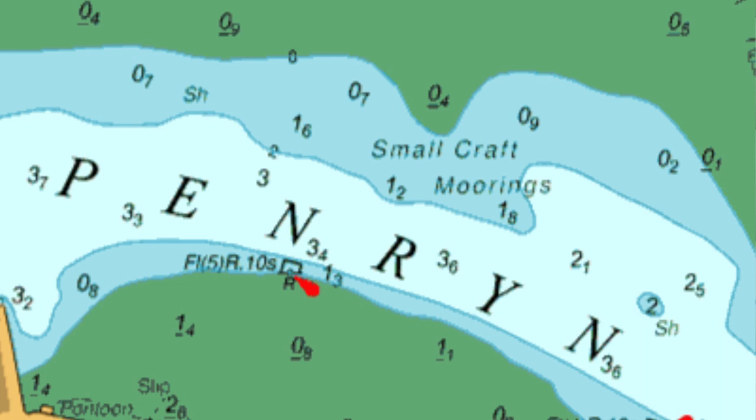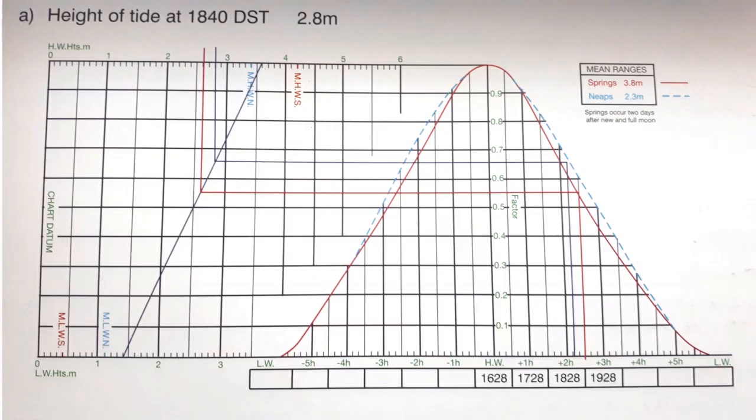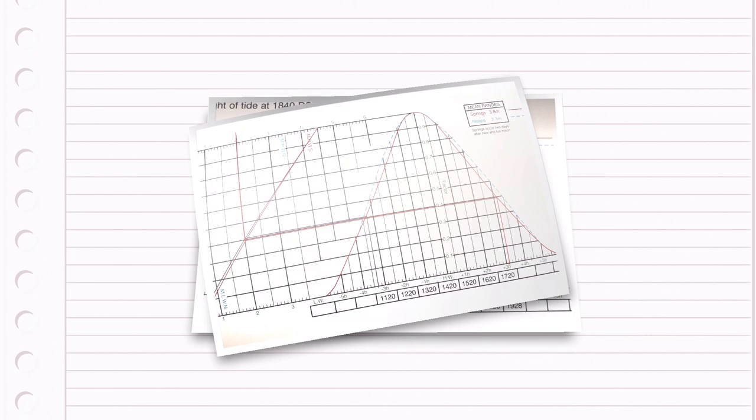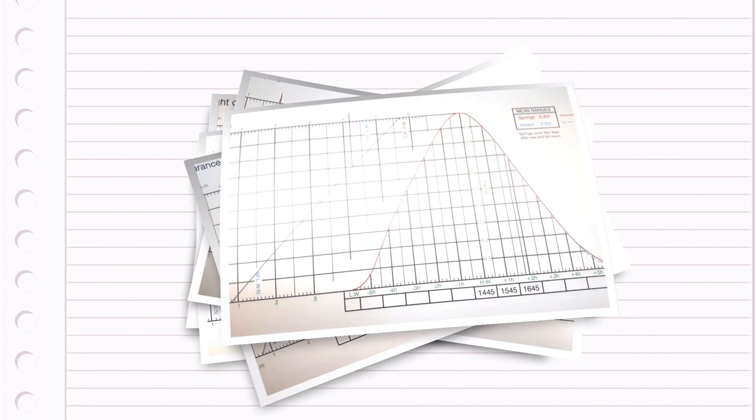Remember that the tidal curve gives you information about the height of the tide. To find the depth of water you add chart datum. In some places you must always use a tidal curve and never the rule of 12s.